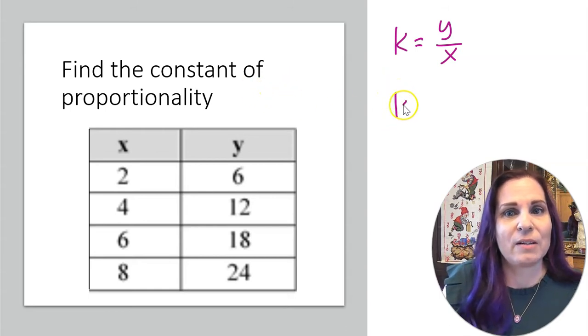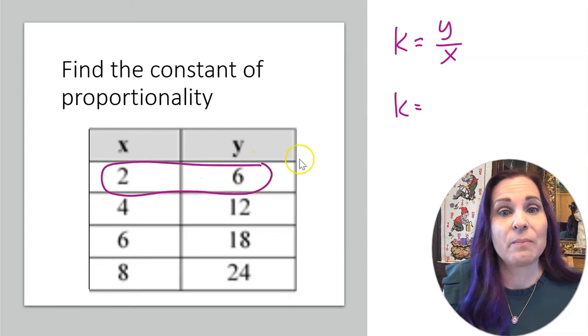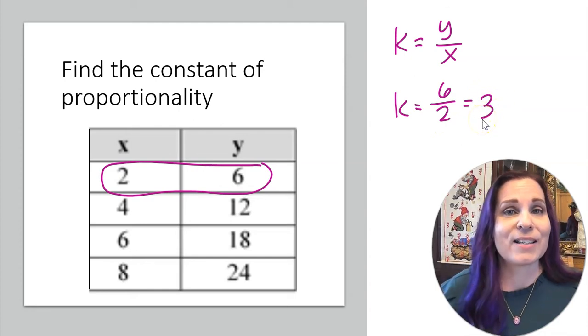So if I choose this y and x pair, then I'll have 6 over 2. That's 3. That is my constant of proportionality. It really is that simple.